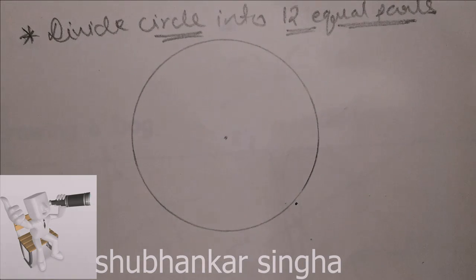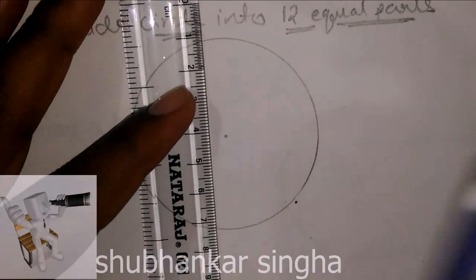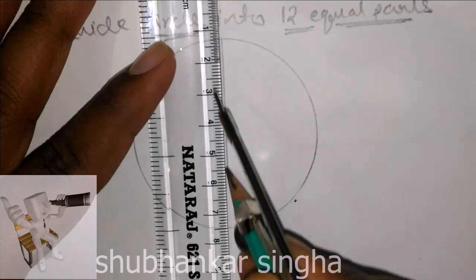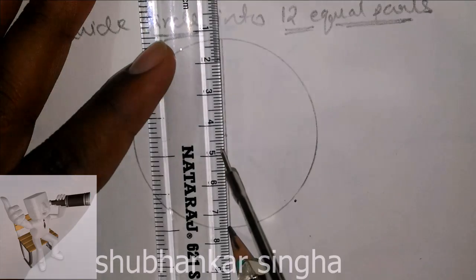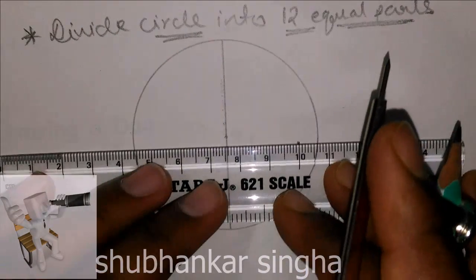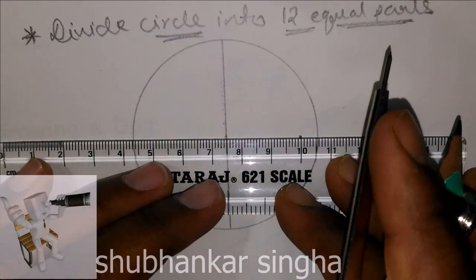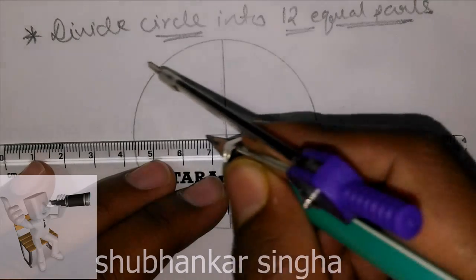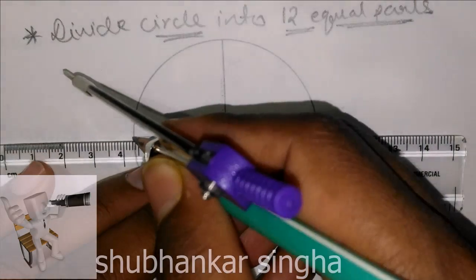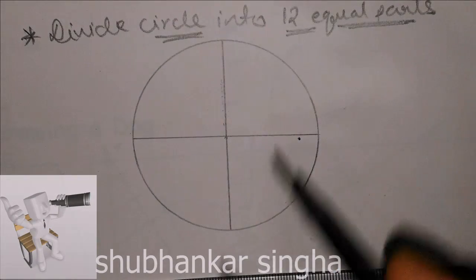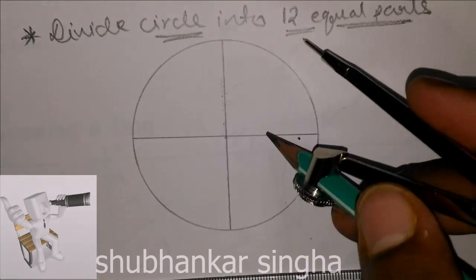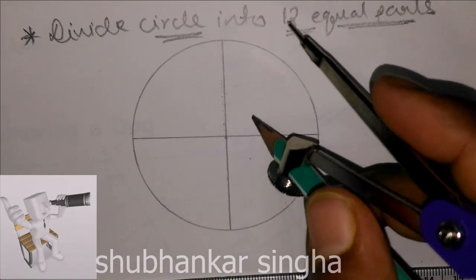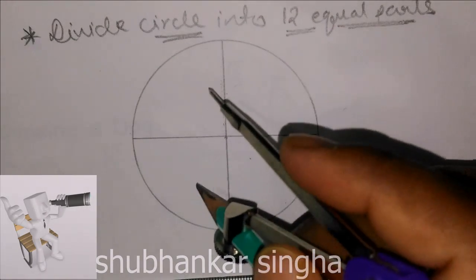First of all we have to draw two diameters of the circle, both passing through the center and both perpendicular to each other. This line and this line are perpendicular to each other, so each angle is 90 degrees.